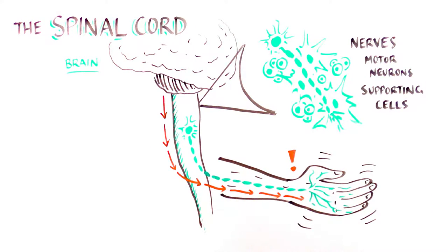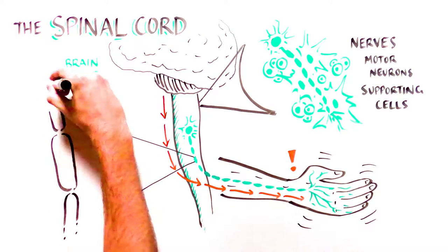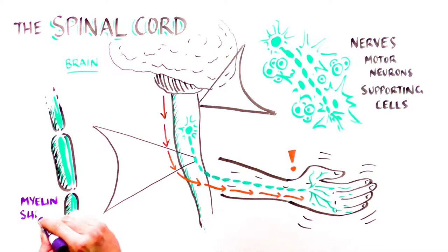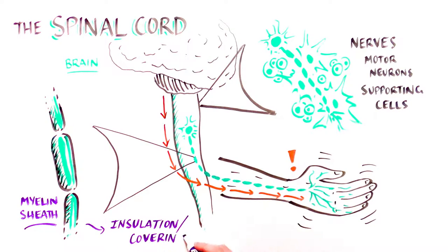The information is transmitted across large distances through a part of the neuron called the axon, which acts like a wire. Axons are protected by a material called myelin, which you can think of as the insulation around the wire.